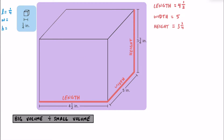Knowing that this is a cube, we know the length is going to be a quarter of an inch, the width is going to be a quarter of an inch, and the height is also going to be a quarter inch. Our formula for finding the volume of a prism is always going to be the area of the base multiplied by the height. The area of the base is found by multiplying the length and the width, then multiplied by the height.